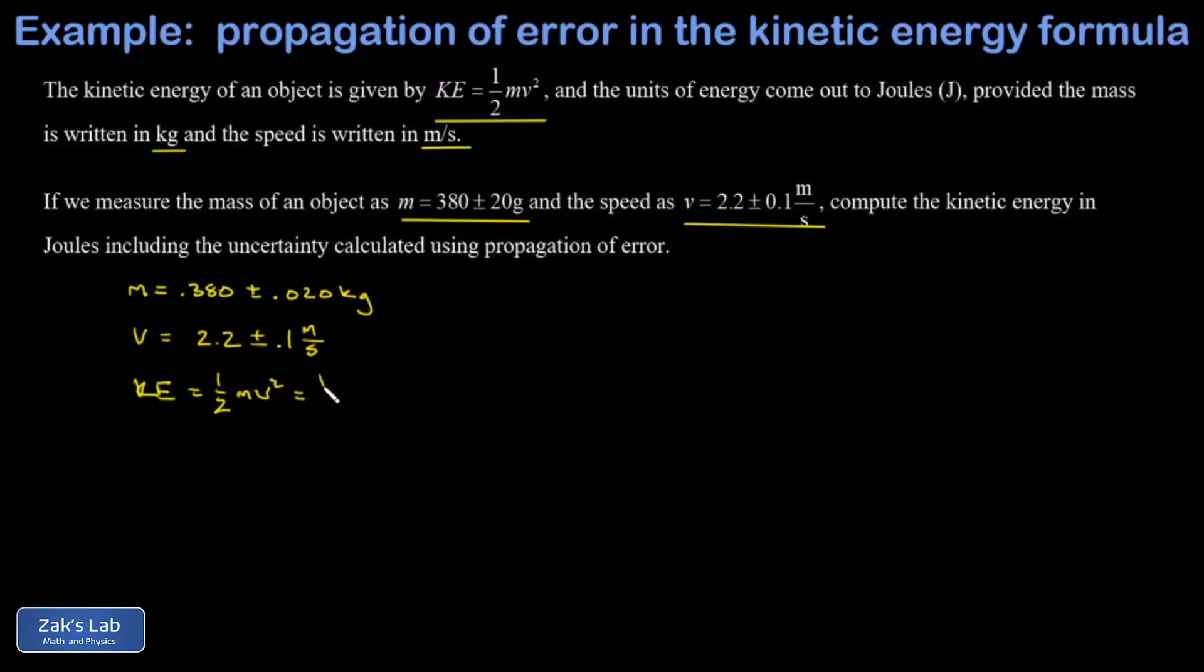I plug in my mass of 0.380 kilograms, my speed of 2.2 meters per second—I need to square that—and I get 0.9196 joules. Now I need to get the uncertainty in the kinetic energy.